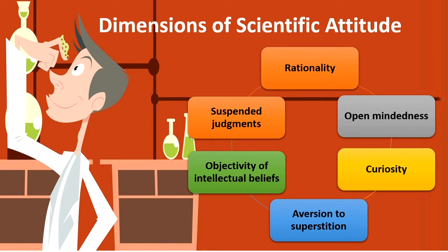A person with scientific attitude is always rational, looks towards anything with open-mindedness, and is always curious to know why something is happening, what is happening, and how it is happening. A person with scientific attitude always avoids aversion to superstitions, shows objectivity towards intellectual beliefs, and also believes in suspended judgments.